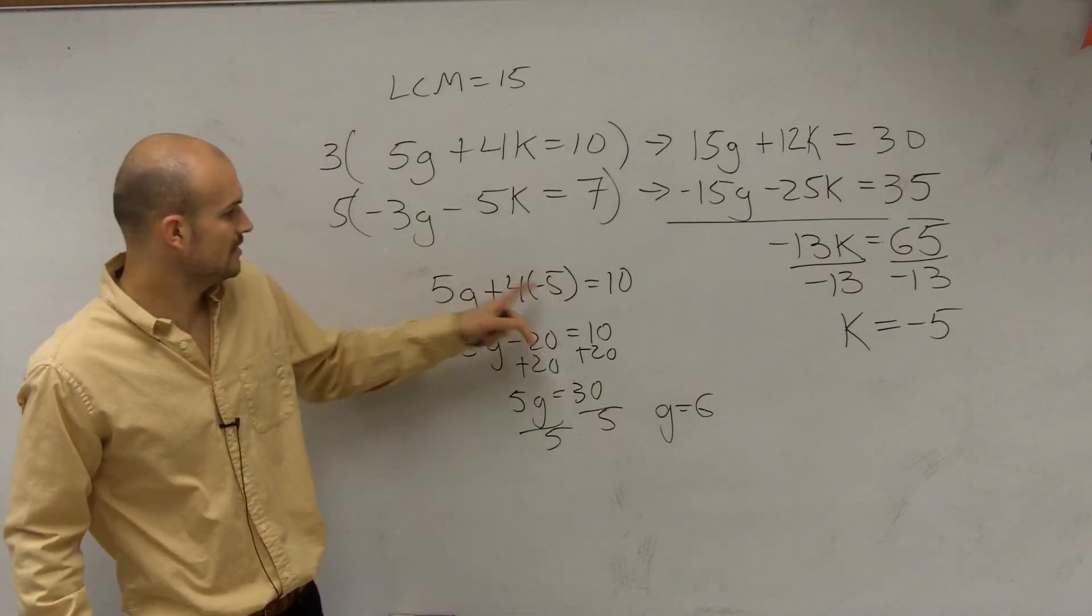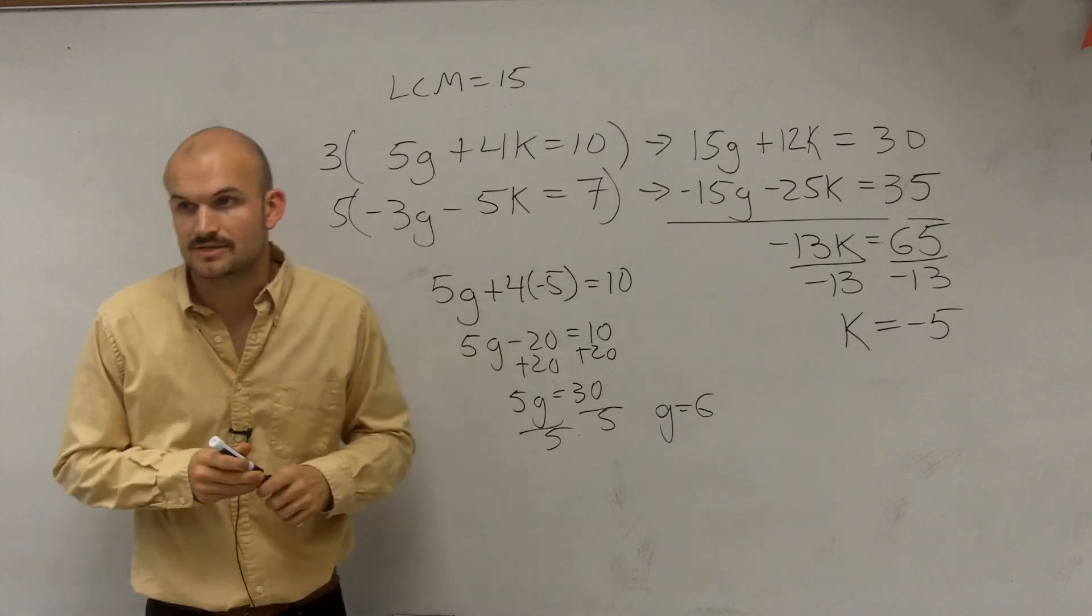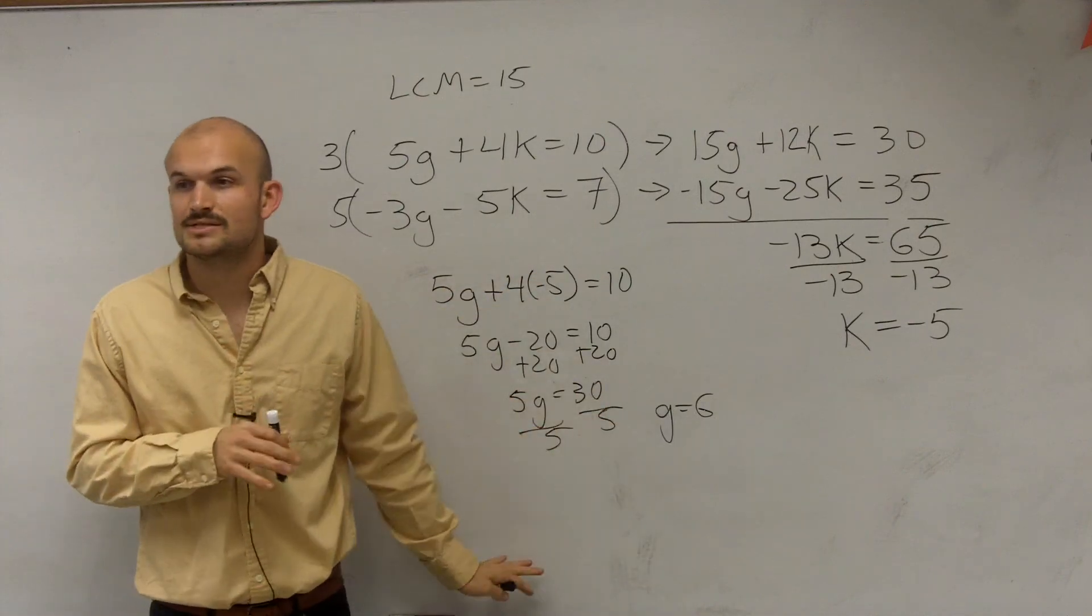4 times 5 is negative 20. So plus a negative 20 is the same thing as minus 20. Does anybody else have any other questions on what I did?